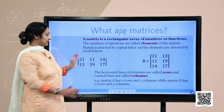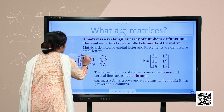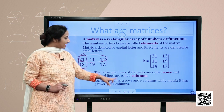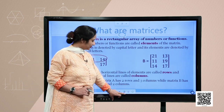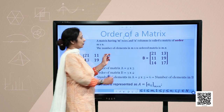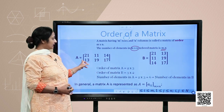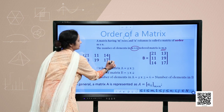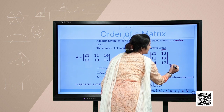The horizontal lines of elements are called rows, and the vertical lines are called columns. So matrix A has two rows and three columns. Similarly, matrix B has three rows and two columns. A matrix having m rows and n columns is called a matrix of order m by n. So the order of matrix A is 2 by 3, and the order of matrix B is 3 by 2.